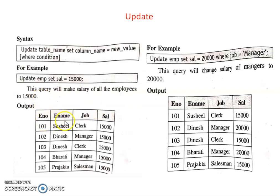The output shows employee number, employee name, job, and salary. The next query sets the salary of manager to 20,000: UPDATE employee SET salary = 20000 WHERE job = 'manager'. This query is executed and the output is displayed, meaning the salary of managers is updated to 20,000.